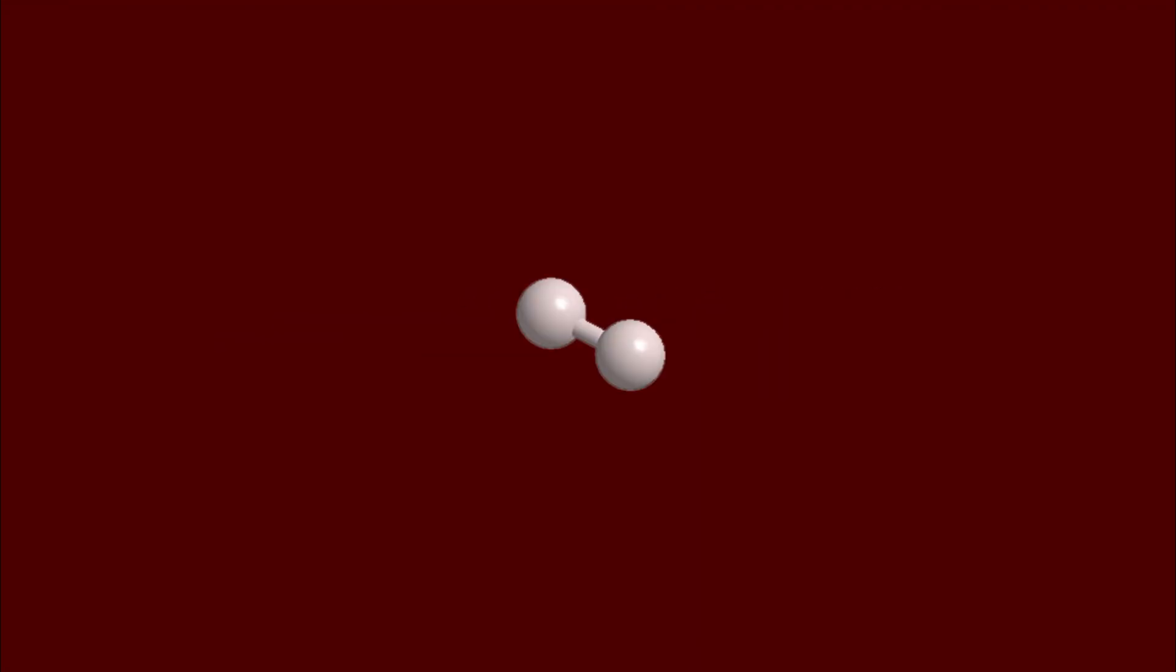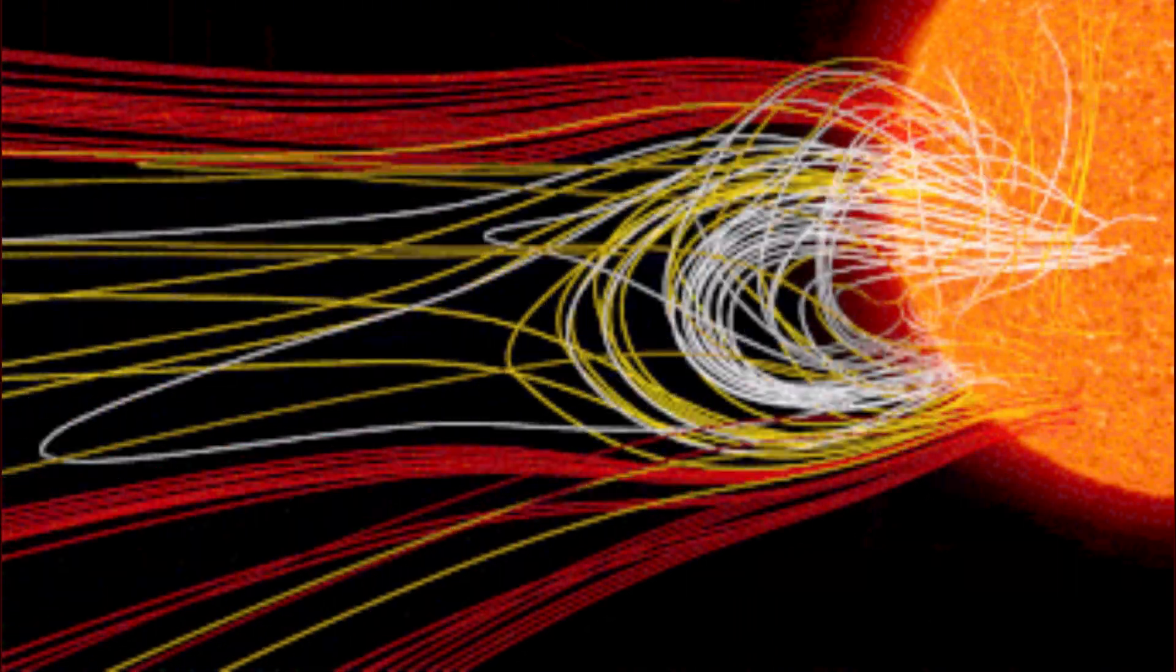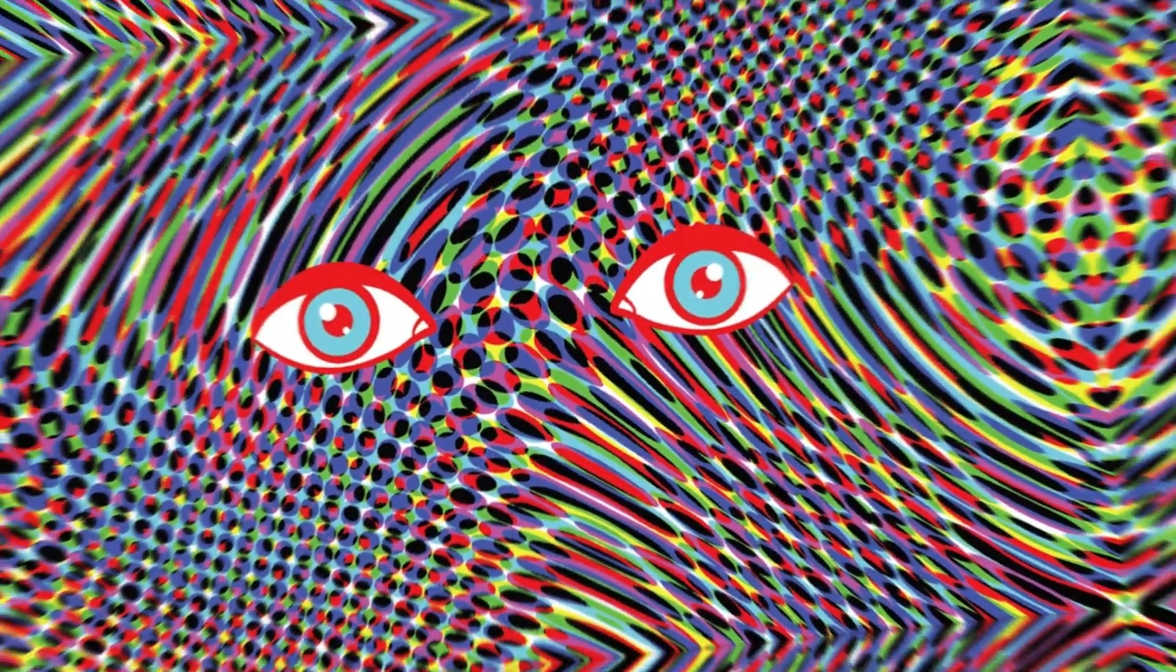While you typically find it paired up, it also comes in the form of ions, which are just a single proton fired from coronal mass ejections on the sun, or as a byproduct of acid-base reactions.